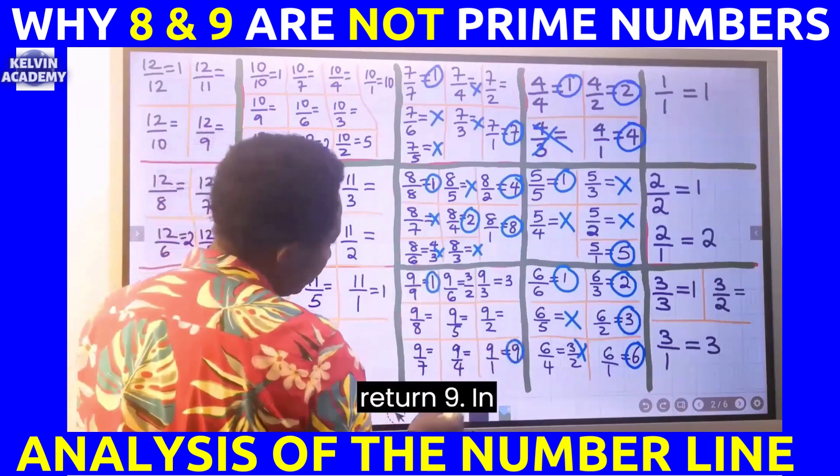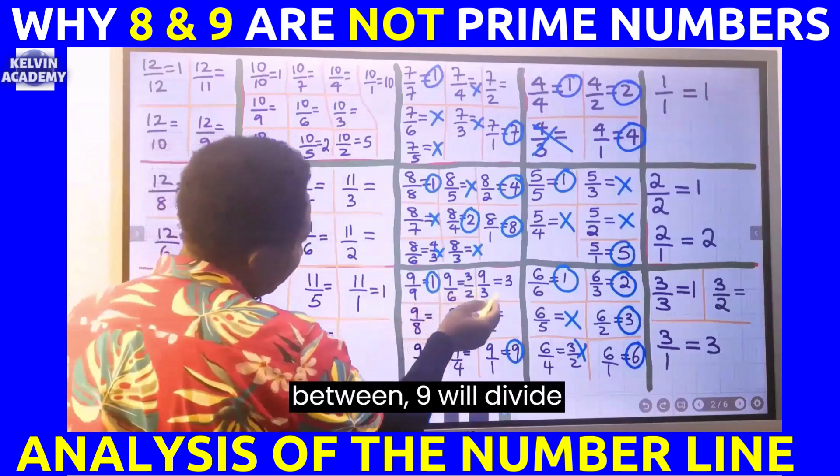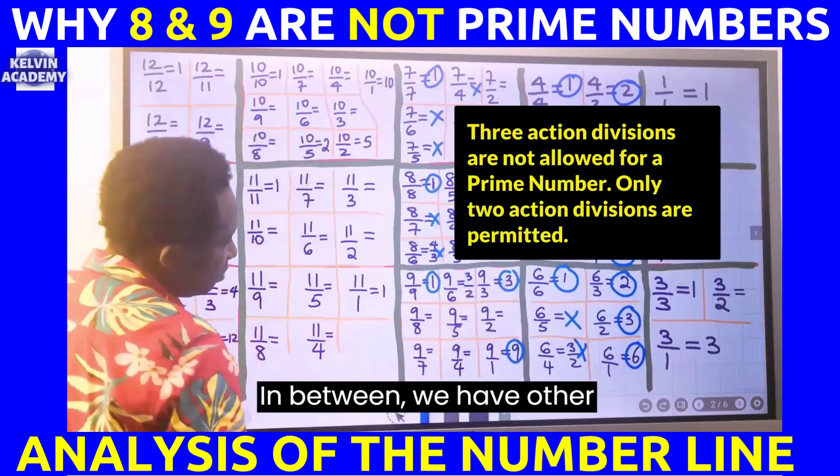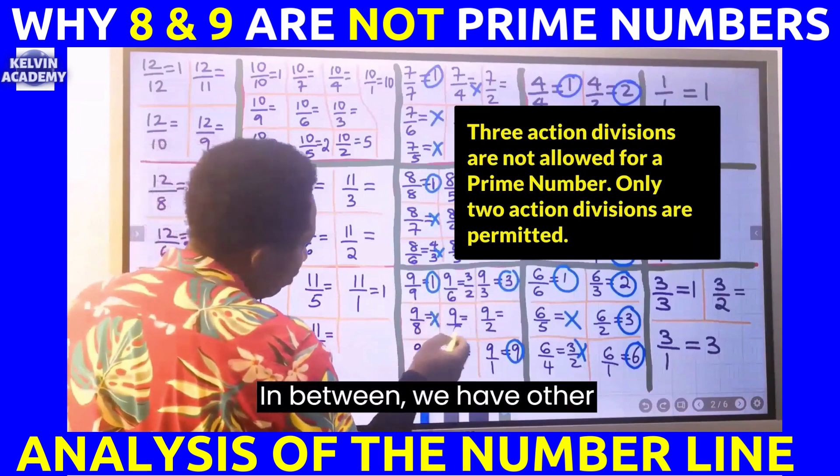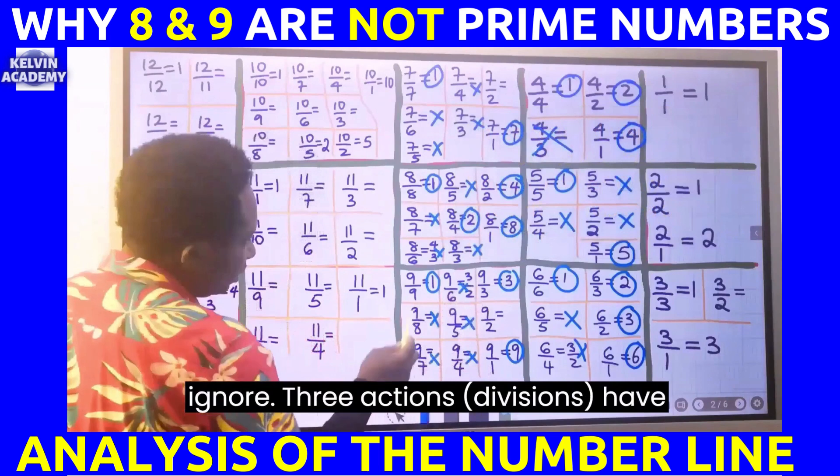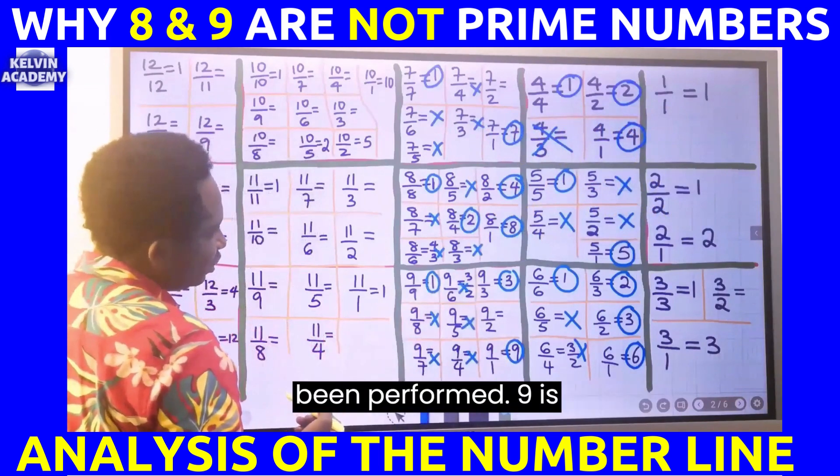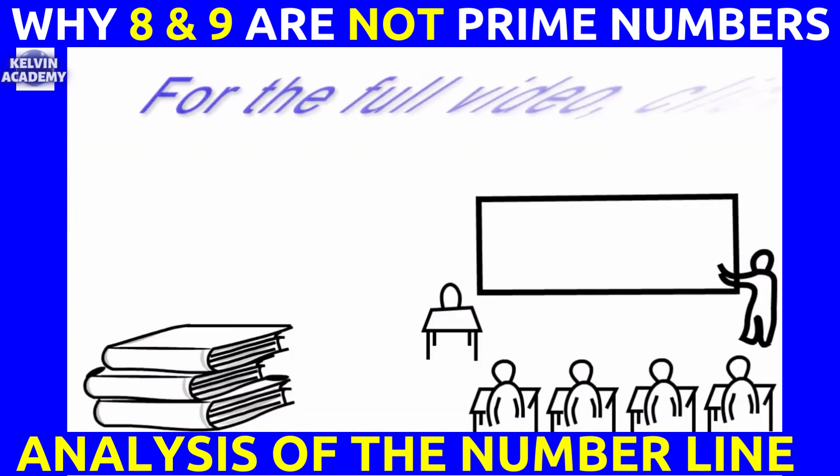Nine divided by nine will return one, nine divided by one will return nine. In between, nine divided by three will return three. We have other fractions which we are going to ignore. Three actions have been performed. Nine is not a prime number.